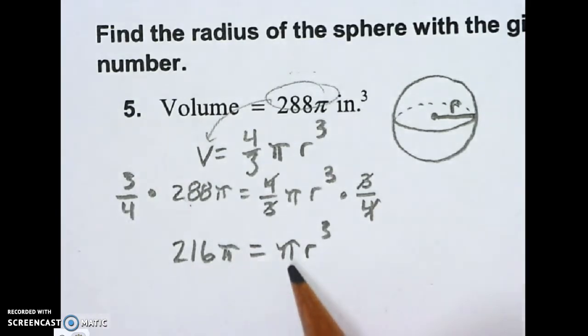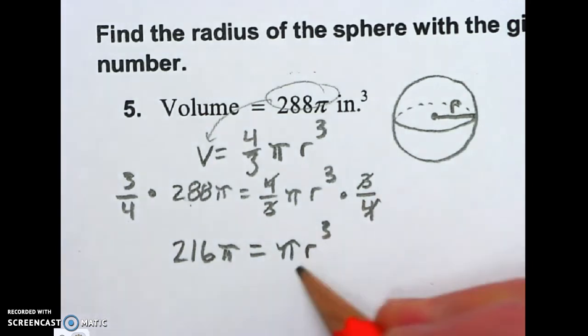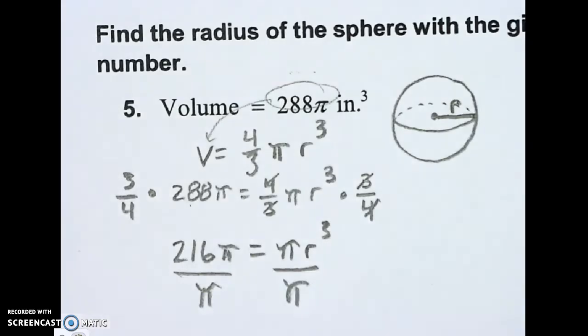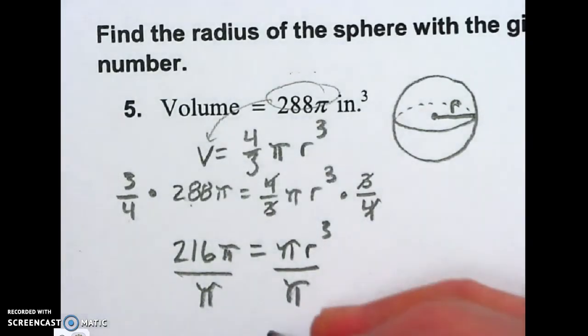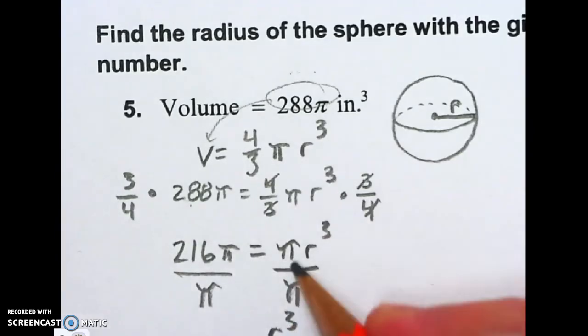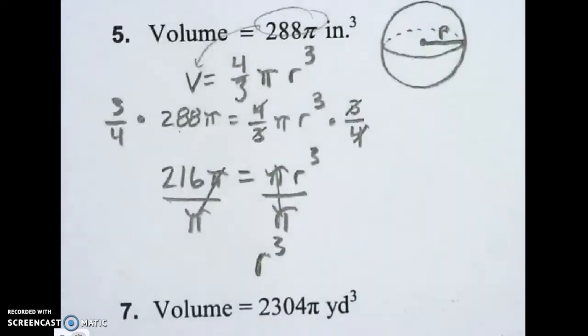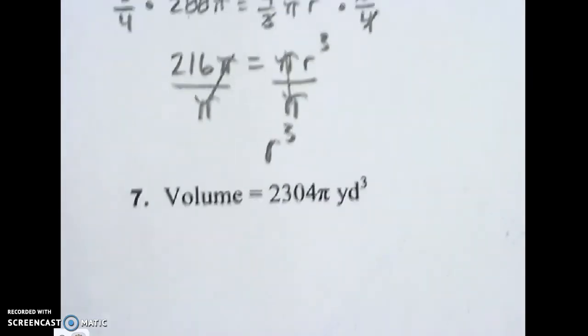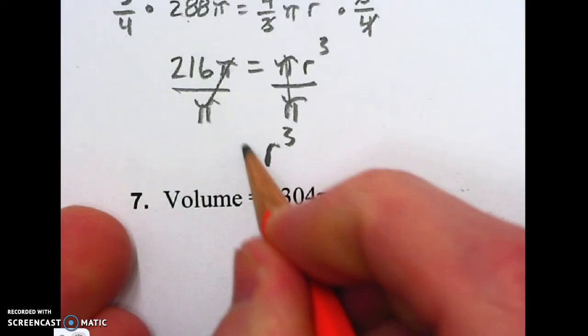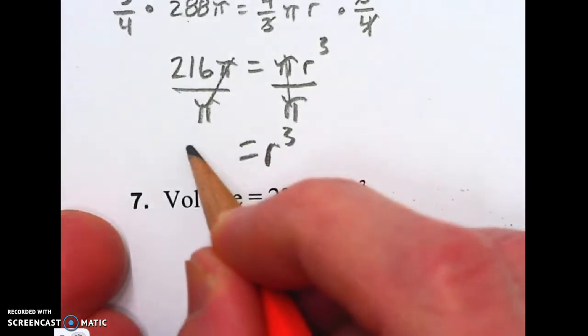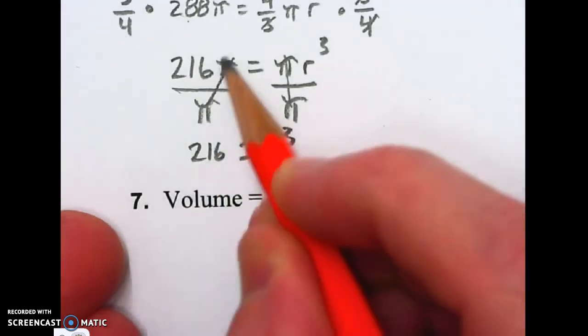Next thing I'm going to do is divide both sides by π. Still ringing. So when I divide by π, this π cancels. Kind of cool. There's π on the other side also. So that cancels. And now I've got just R cubed. So this is just 216 because the π is perfectly canceled.